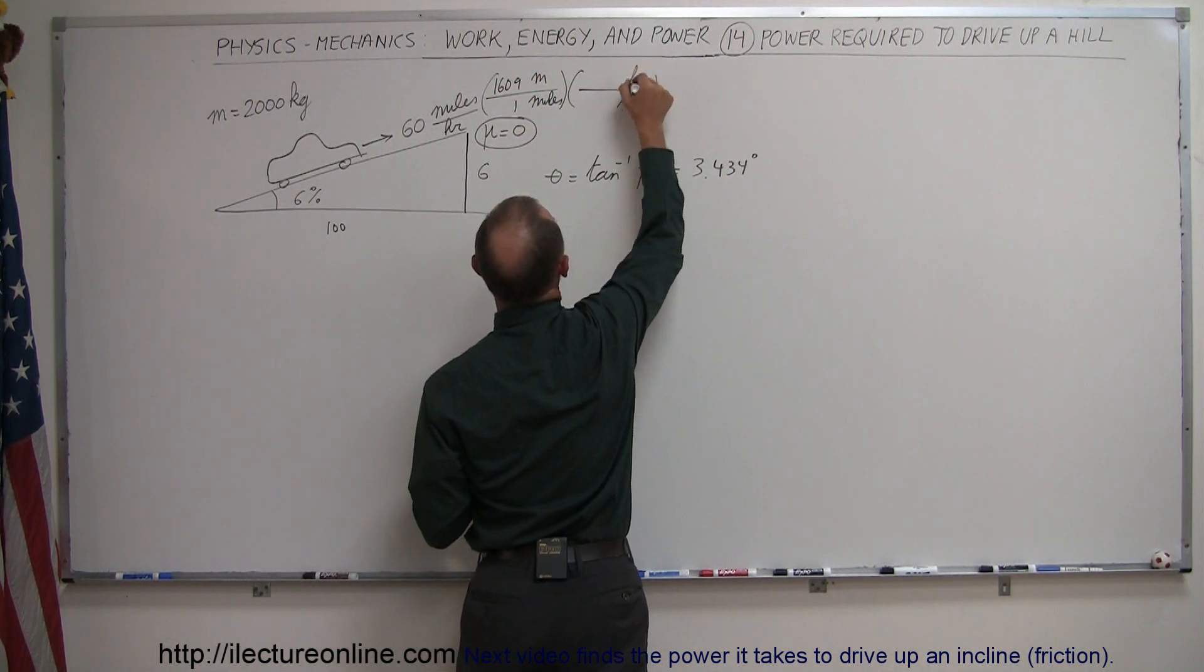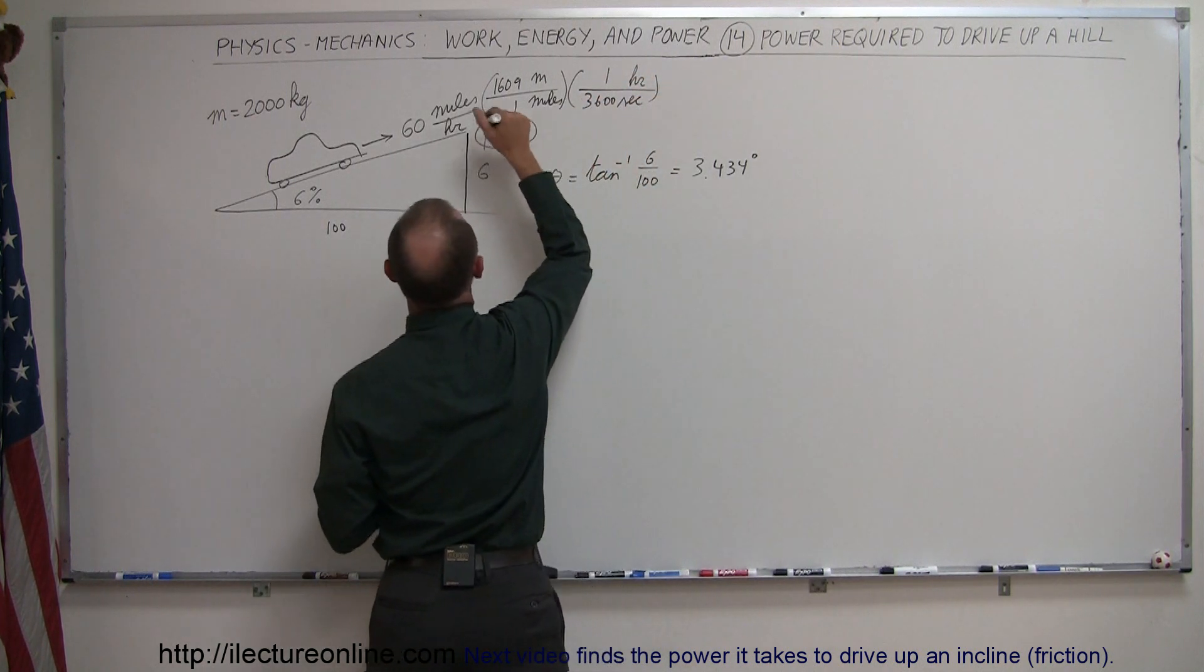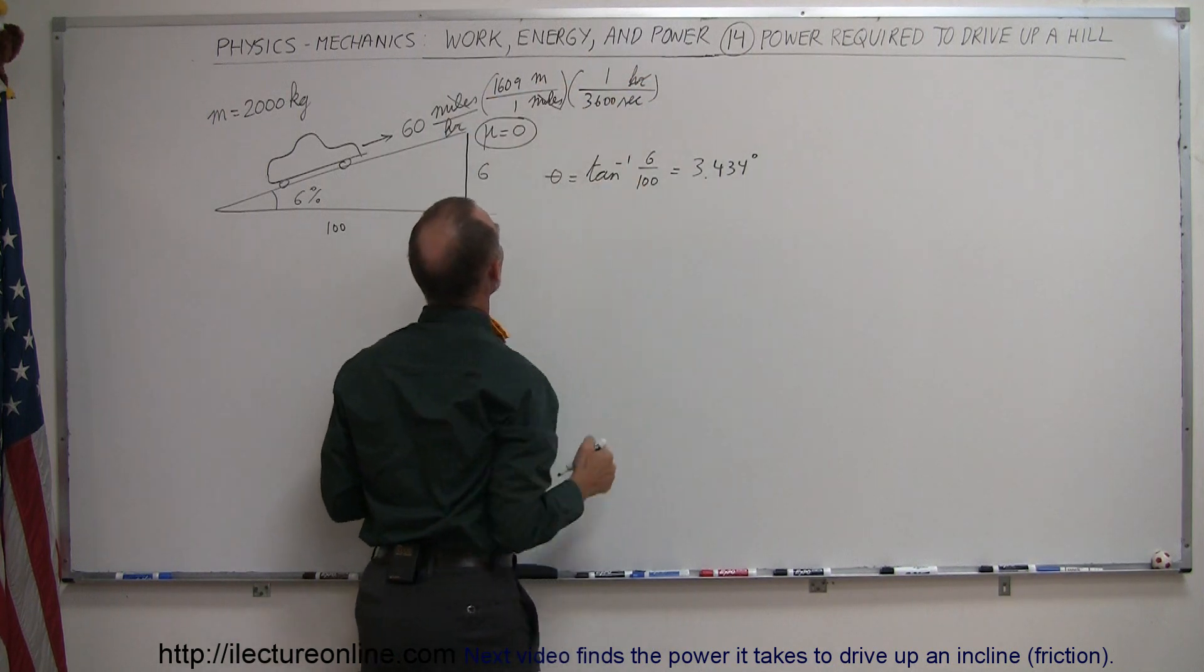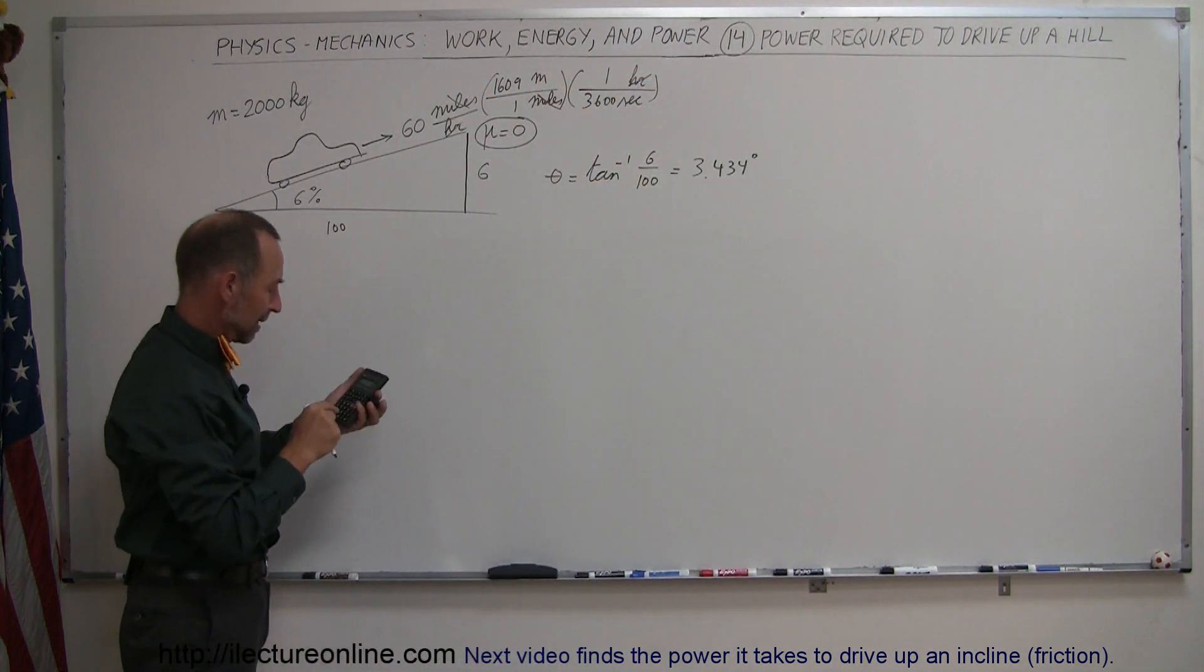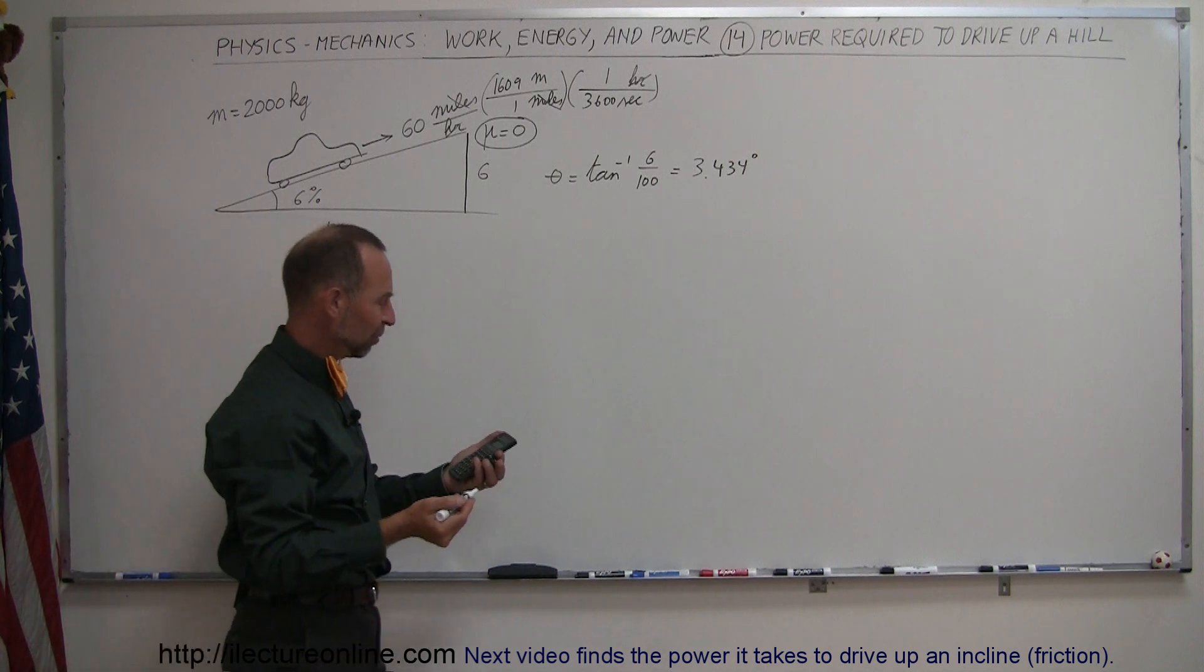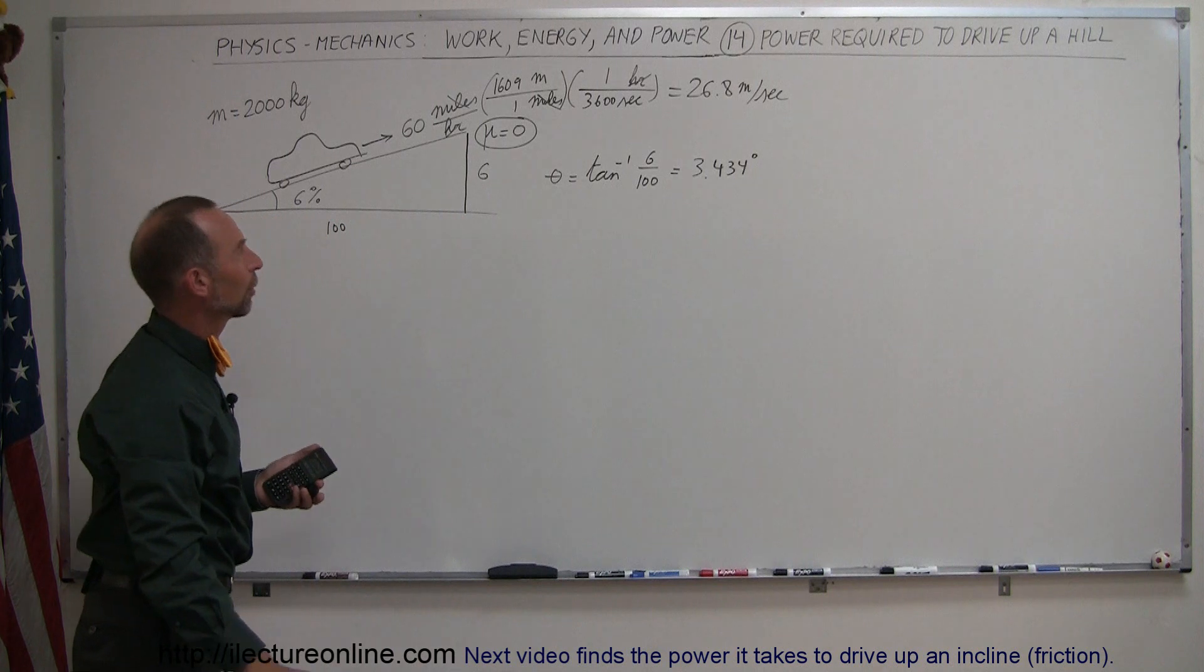So we have seconds at the bottom, hours at the top, one hour is 3600 seconds. Notice that the hours will cancel out, and the miles will cancel out, we're left with meters per second. So we take 60 times 1609, and divide it by 3600, and that gives us 26.8 meters per second. Now we have some better units to work with.